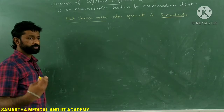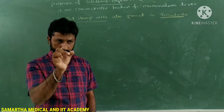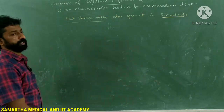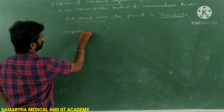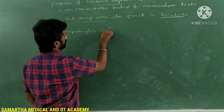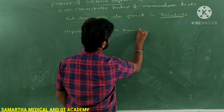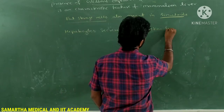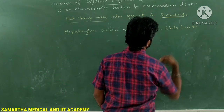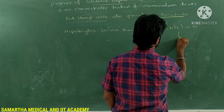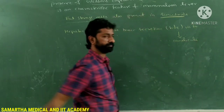The hepatocytes present in the cords release their secretion — that is bile — into the space present between the cords of one string, which is called the canaliculi. Sinusoids are blood-filled spaces present between hepatic cords.